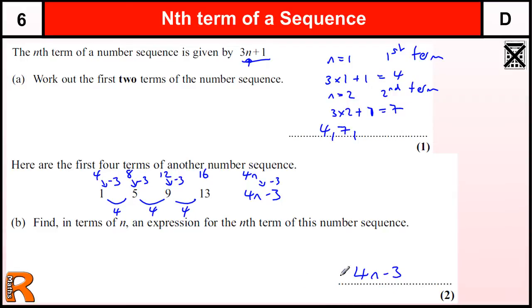Be careful not to write anything extra in here, we don't put n equals or anything else, it's just 4n minus 3.